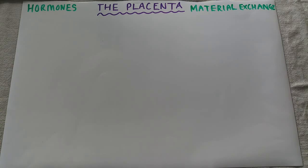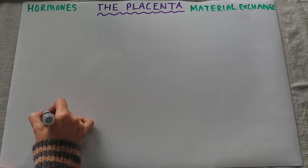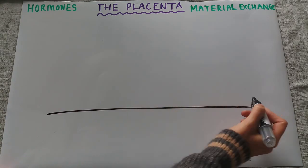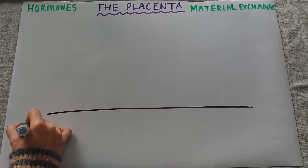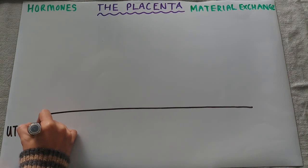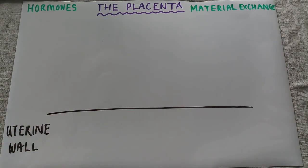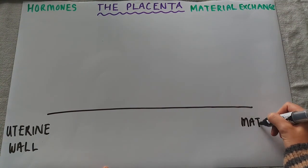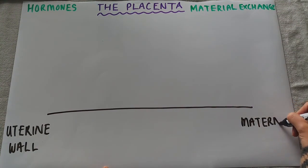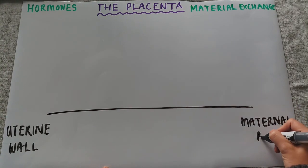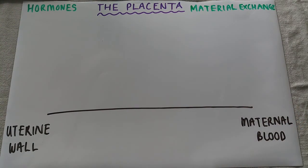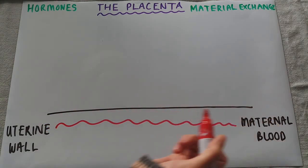In terms of this drawing, you don't need to be able to draw this — I just find it easier to understand visually. Here we have the uterine wall, which is part of the mother and will contain maternal blood. I'm going to represent that with a red line.